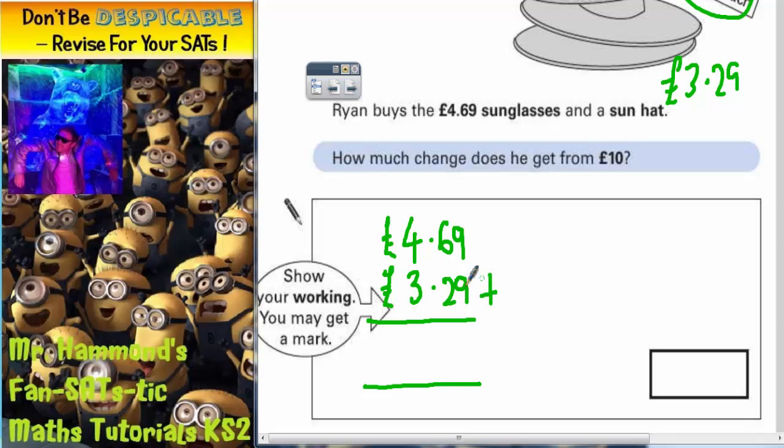So if we add these together we'll find the total of what he's spending. Nine plus nine is 18, put your eight in, carry your one. Six plus two is eight, plus that one is nine. Four plus three is seven, and the only thing we need to put in now is the decimal point which goes there and the pound sign.